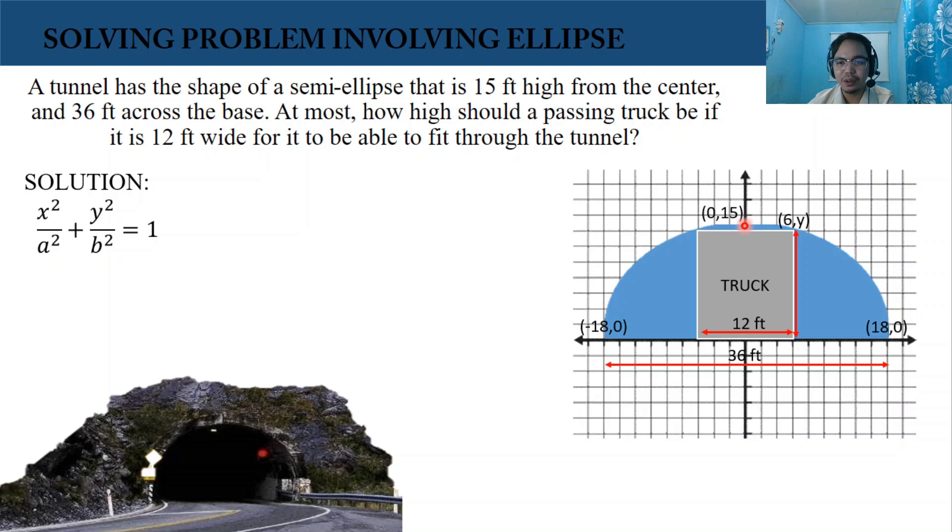Then we have the value of x, which is 6. Because this point is passing through the ellipse, our ellipse passes through this point.